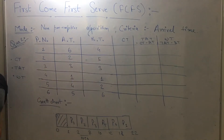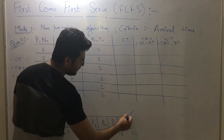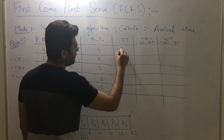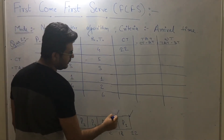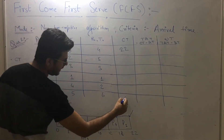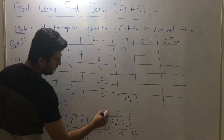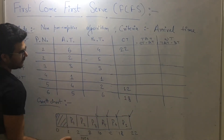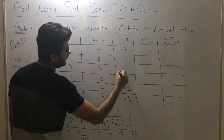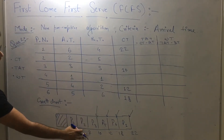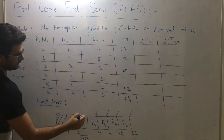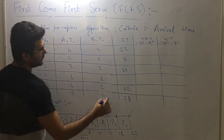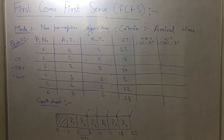Based on the Gantt chart, we will fill in the remaining values in the table to calculate completion time, turnaround time, and waiting time. The completion time of process one is twenty-two units. Process six is completing at eighteen units. Process five is completed at twelve units. Process three is completing at ten units. Process two is completing at seven units. And finally, process four is completing at two units.